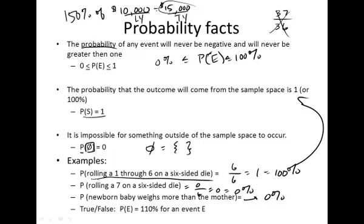True or false? The probability of an event is 110% for an event E. Of course, this is false, because that's greater than 1. This is 1.1, which is greater than 1, which is impossible.